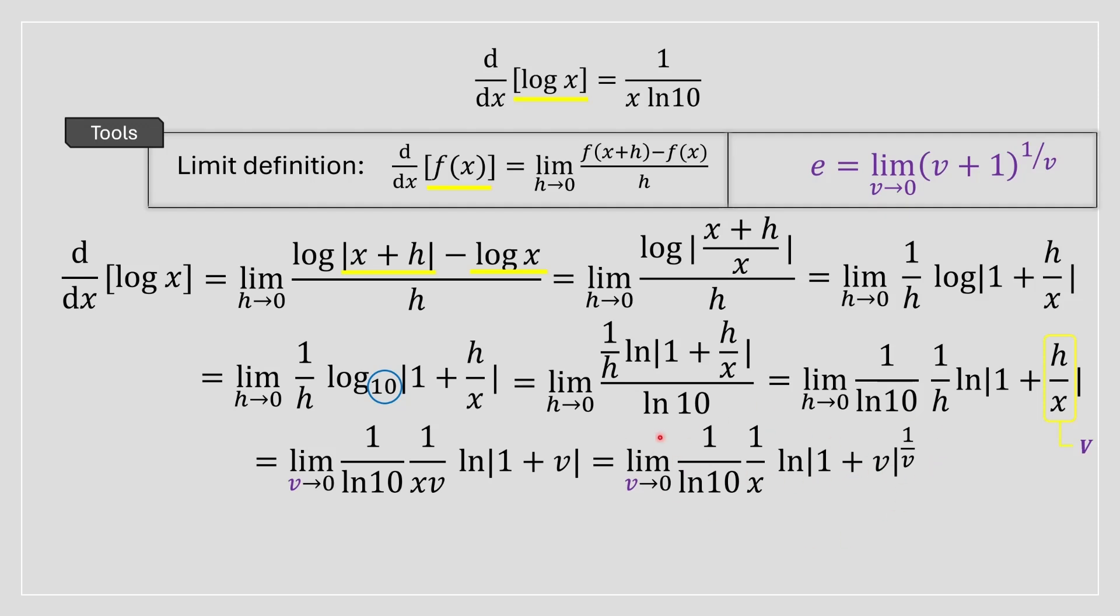We're going to move the limit as v approaches zero after the ln. We can do that, and then we have something that looks like this, which resembles, it's basically the same thing as this. So we can substitute our Euler's number in.